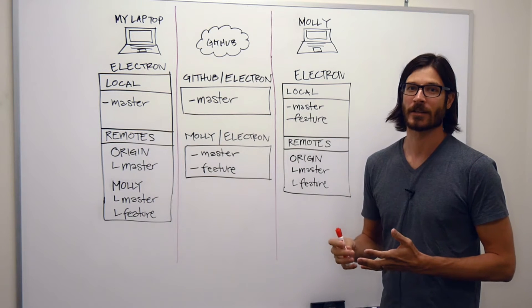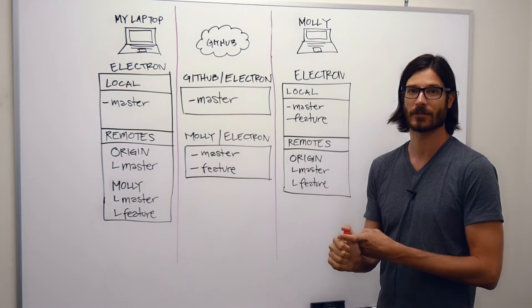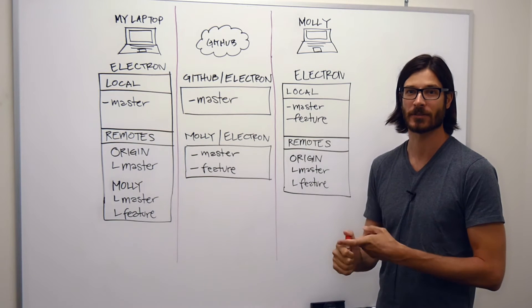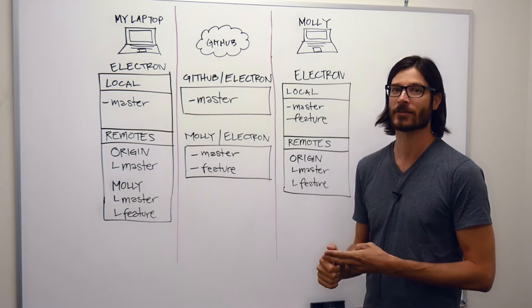There are two different ways that you can add a remote. You can either clone a repository to your local machine, which will actually create the remote automatically, and then you can add a remote connection manually.